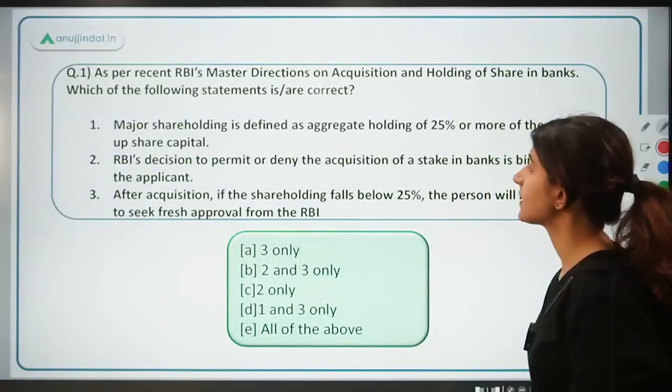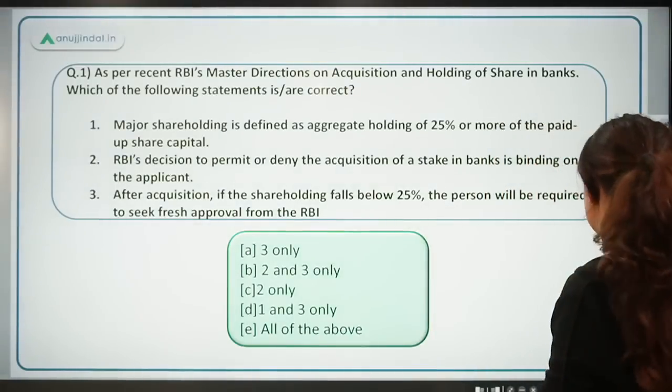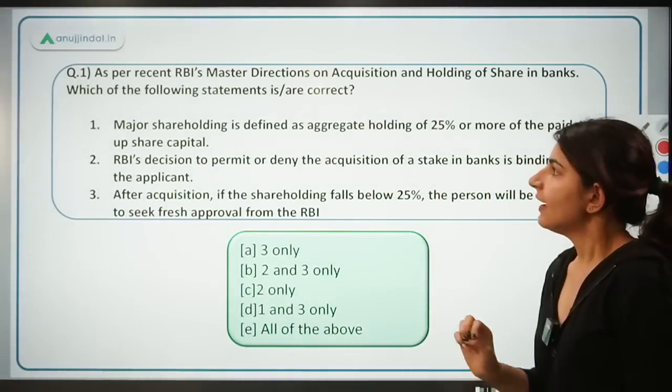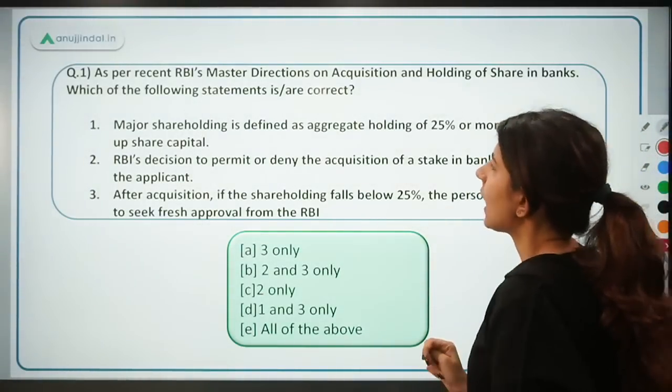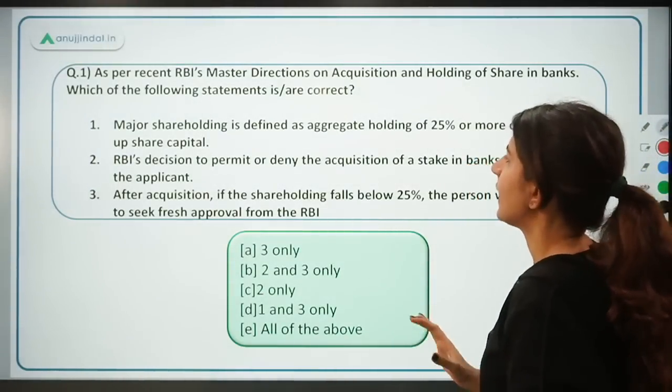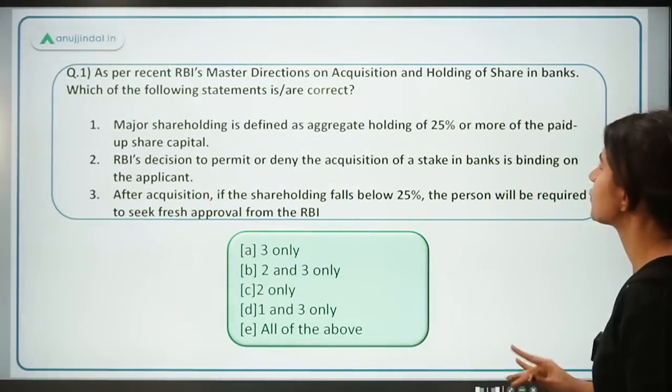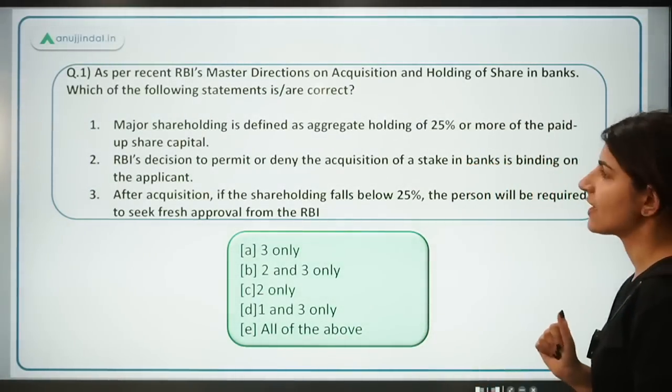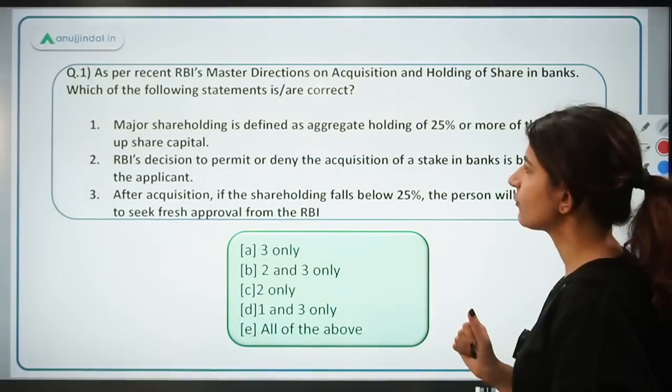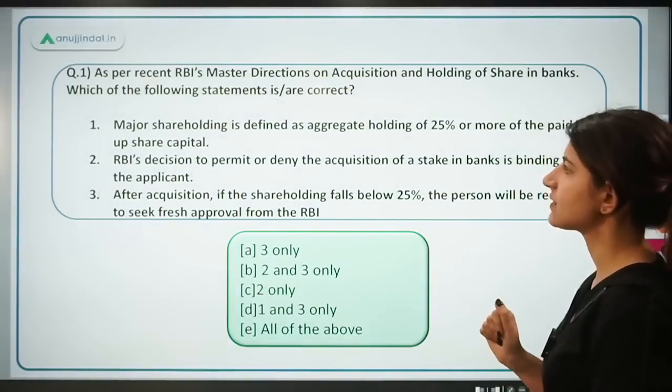Let's get started with the questions. As per the recent RBI master direction on acquisition and holding of shares in banks, which of the following statements is incorrect?